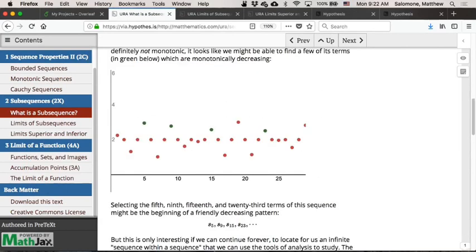Just realize that all we're doing when we pick a subsequence is choosing some infinite collection of terms in that sequence and just ordering them in the same way that they were ordered in the original sequence.